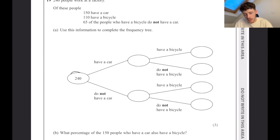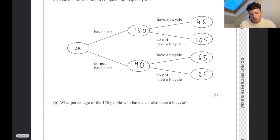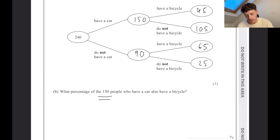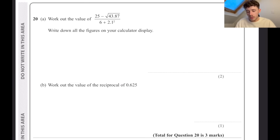240 people work at a factory. 150 have a car, which means 90 do not. 110 have a bicycle. 65 of the people who have a bicycle do not have a car. So 65 people who don't have a car have a bicycle. 110 in total have a bike, so that's going to put 45 up there. 150 here means that this gap has to be 105 and this gap has to be 25. What percentage of the 150 people who have a car also have a bike? Bearing in mind this is out of 150, if they also have a bike, that's 45 out of 150. We can put that in our calculator as 45 divided by 150, which is 0.3, so that is the same as 30%.